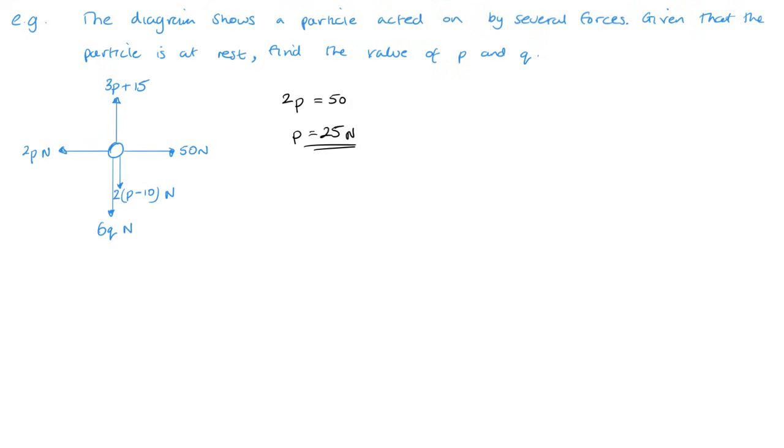So we found p straight away. And then looking vertically, we've got 3p plus 15 equals 6q plus two lots of p minus 10. Now I've found out what p is already, so that's 25. So 3 times 25 plus 15 equals 6q plus 2 times 25 minus 10.